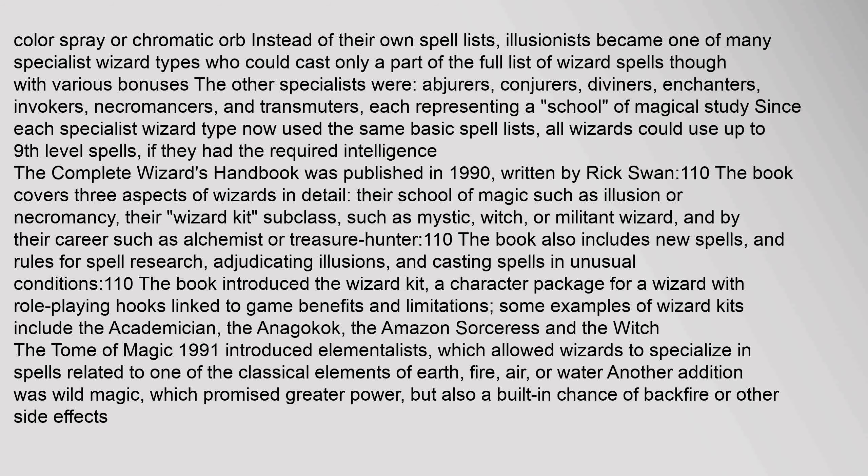The Complete Wizard's Handbook covers three aspects of wizards in detail: their school of magic such as illusion or necromancy, their wizard kit subclass such as mystic, witch, or militant wizard, and their careers such as alchemist or treasure hunter. The book also includes new spells and rules for spell research, adjudicating illusions, and casting spells in unusual conditions.